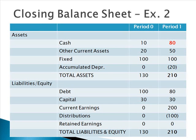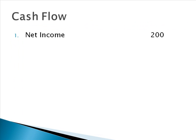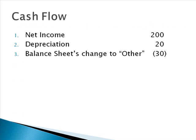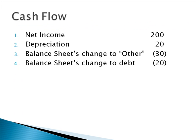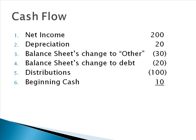I'm not comfortable just using a plug-in number, so let's work through the statement of cash flows. Net income is 200, depreciation of 20, balance sheet change to other was 30, balance sheet change to debt was 20, distributions of 100, and beginning cash in this example was 10. That means the total value of cash must be 80 — which is exactly what we had. We are indeed in balance.